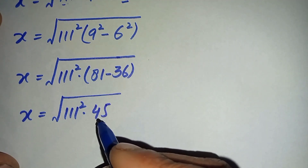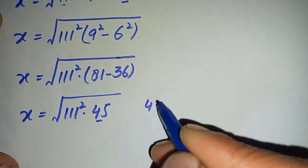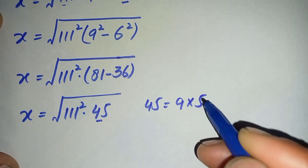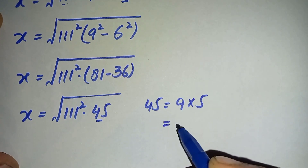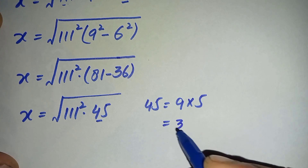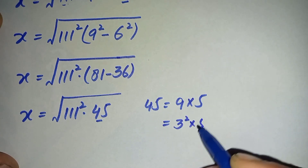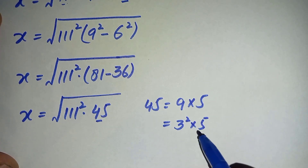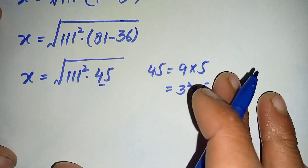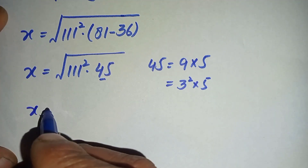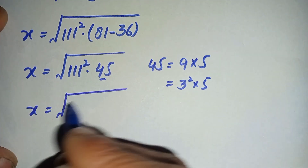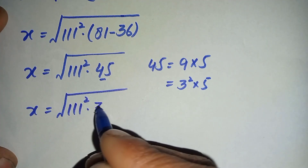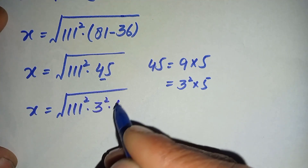Now in the next step we will factorize the number 45. We can write 45 as 9 times 5. And 9 can be written as 3 squared times 5. So we replace 45 with 3 squared times 5, giving us x is equal to the square root of 111 squared times 3 squared times 5.